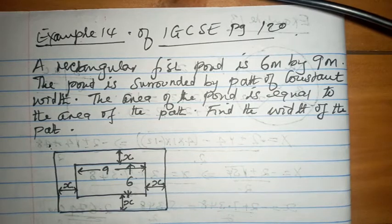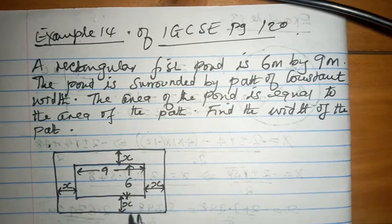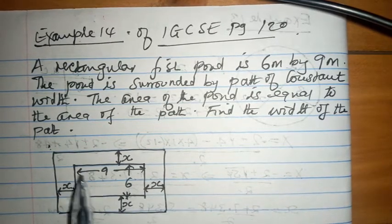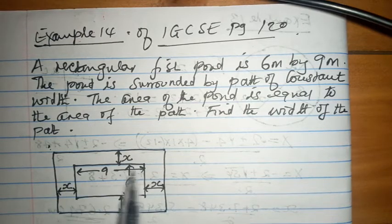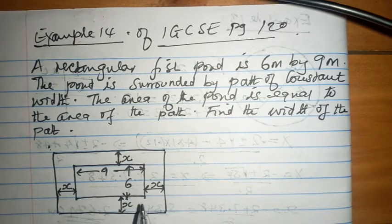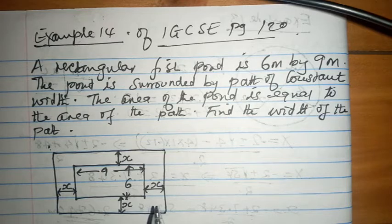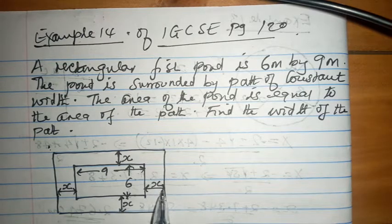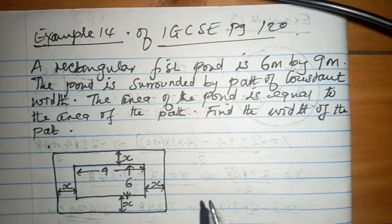A rectangular fish pond is 6 meters by 9 meters. The pond is surrounded, and you can see this is the pond, 6 meters and 9 meters. The pond is surrounded by a path of constant width. If this width is X, this must be X, this must be X, and that must be X, constant width.